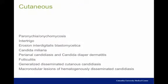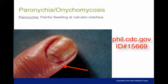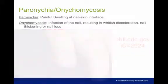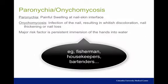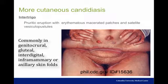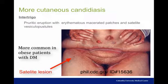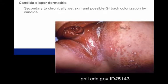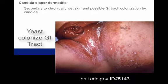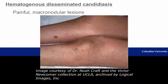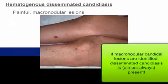Cutaneous candidal infections include paronychia, a painful swelling at the nail-skin interface, and onychomycosis, a nail infection with associated nail thickening, whitish discoloration, and nail loss. Both occur more in individuals who immerse their hands in water for long periods. Intertrigo is an erythematous irritation in the skin folds, appearing as macerated patches with satellite vesiculopustules that eventually rupture. Candidal diaper dermatitis arises from chronic wet diapers breaking down genital skin, with GI tract yeast colonization also contributing. Cutaneous macronodular lesions indicate a high probability of hematogenous dissemination.